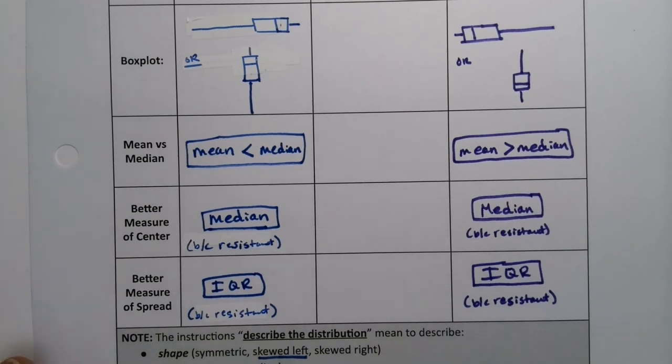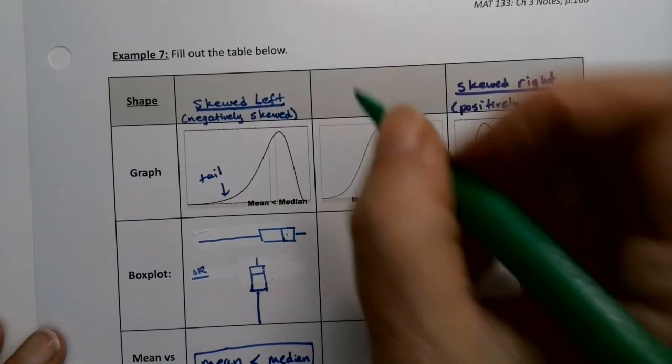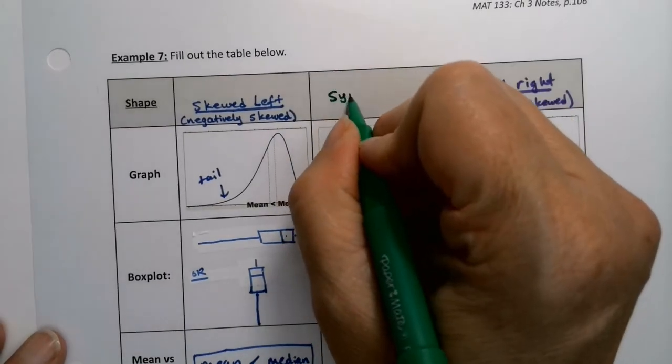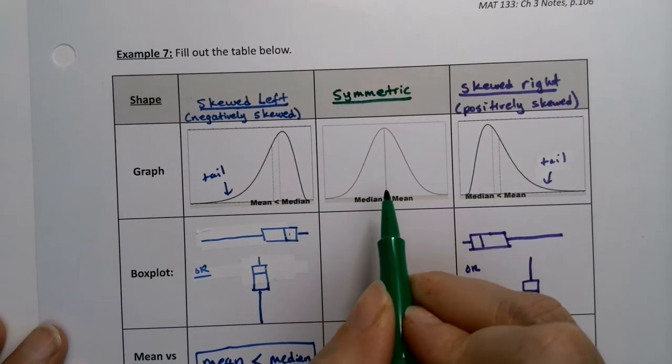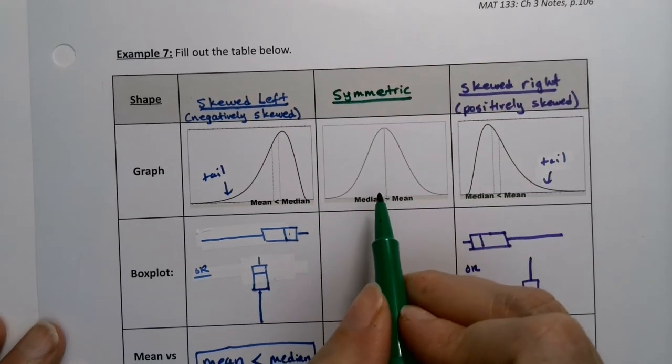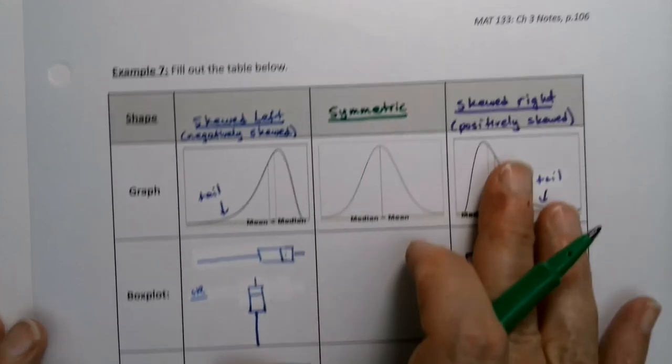Now, last but not least, what about the middle? If it's symmetric, we don't actually know if it's bell-shaped. Bell-shaped is just one type of symmetric graph, but there are other symmetric graphs.